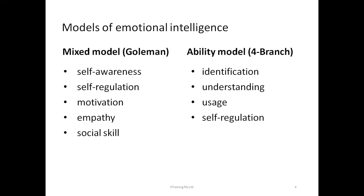There are certain models of emotional intelligence. The mixed model, given by Goleman, includes self-awareness, self-regulation, motivation, empathy, and social skills. The ability model, given by the four branches, includes identification, understanding, use, and self-regulation of emotions.